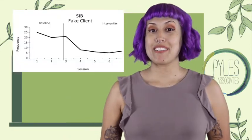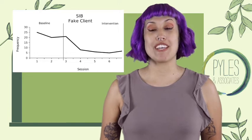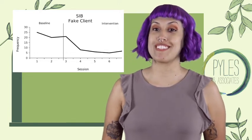Once a clinician has a reliable, predictable measure of a behavior, that makes it more possible to prevent that behavior. This is important when discussing behaviors that are not compatible with overall growth of an individual, such as self-injurious behavior, or what's called SIB.